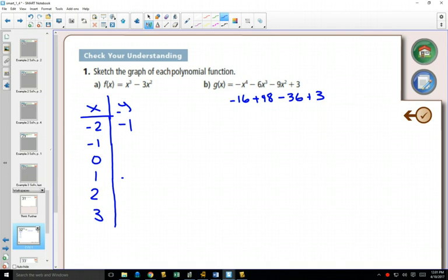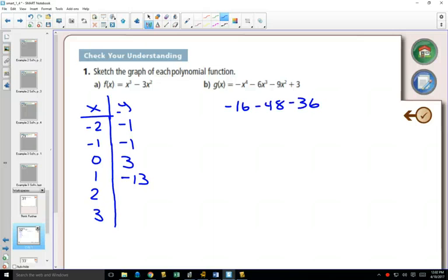Negative 1. Does that look about right? Plug in negative 1. What are you going to get? You're going to get negative 1 plus 6 minus 9 plus 3, negative 1. Plug in 0. This was 0, it was so nice to plug in. 0, you get 3. Plug in 1. Negative 1 minus 6 minus 9 plus 3, negative 13. Plug in 2. Negative 16 minus 48 minus 36 plus 3.